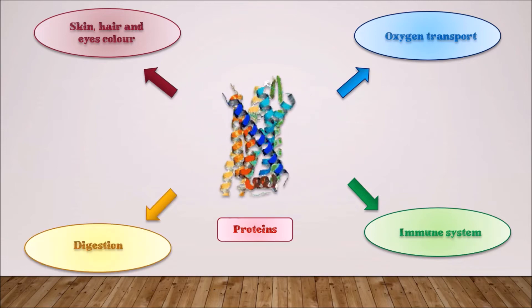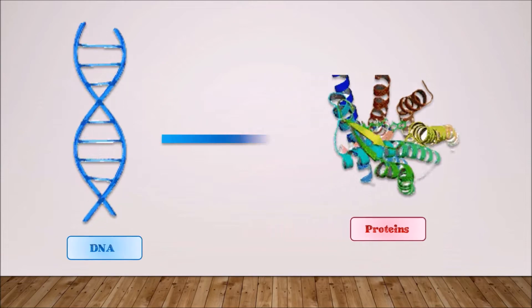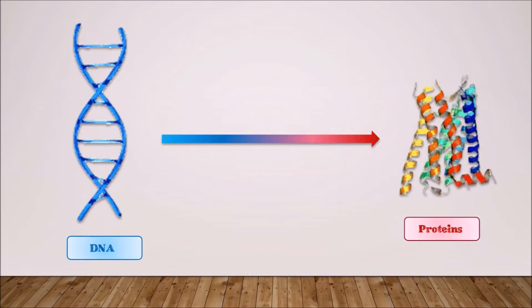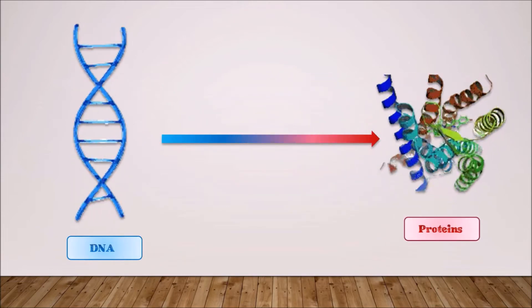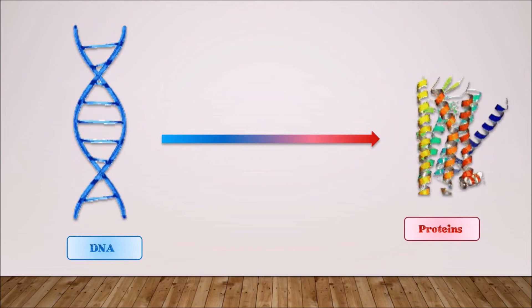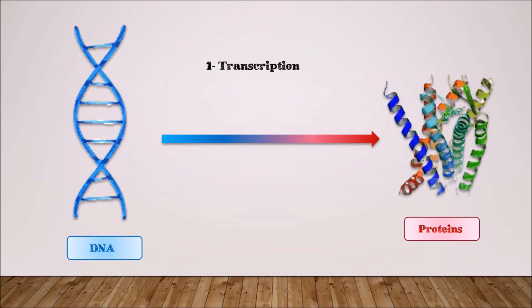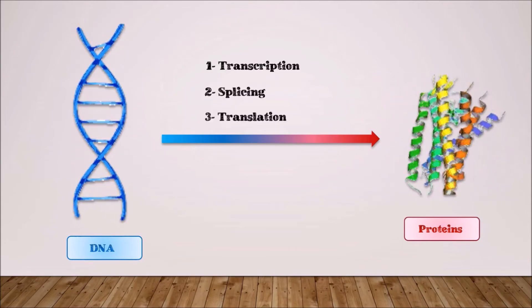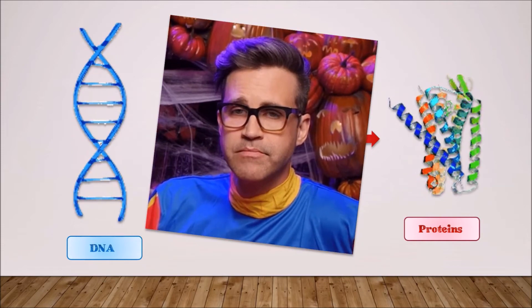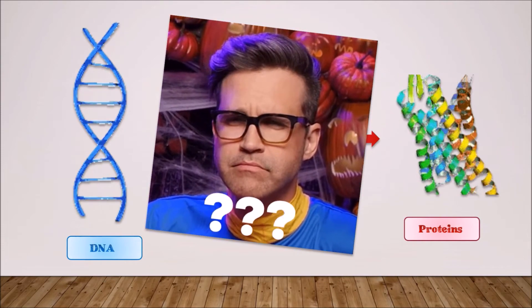But before they are proteins, these proteins come from the DNA molecule and especially the genes it contains. Indeed, this DNA molecule will have to go through three stages: transcription, splicing, and translation. Don't worry, I'll explain everything!